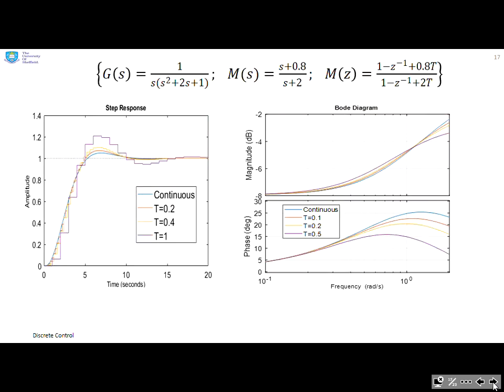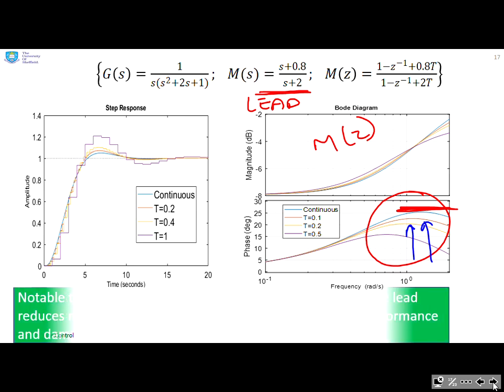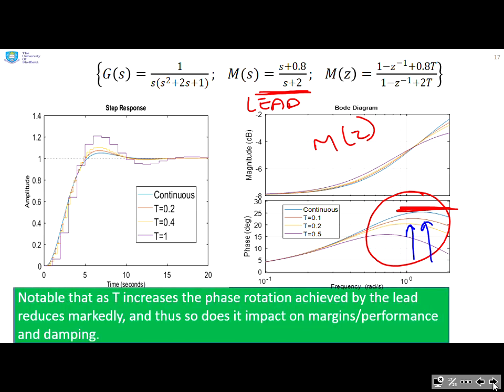However, let's look at this second example. Now what do you see? Remember, this is the Bode diagram for the compensator. What can you see down here? Really significant phase differences. Now this M(s) is a lead, and lead compensators are chosen for this peak phase. Here in the continuous time I'm getting 25 degrees of peak phase. But when I look at the discrete equivalents, what can you see? The peak phase I'm getting, not only is it in a slightly different position, it's significantly lower, so it's not going to be as effective. So that as T increases, the phase rotation achieved by the lead reduces markedly, and thus so does the impact on margins in performance and damping.